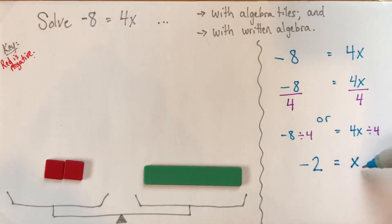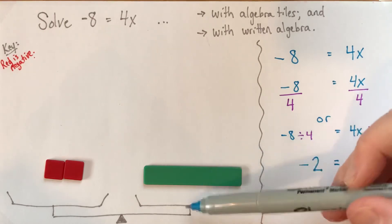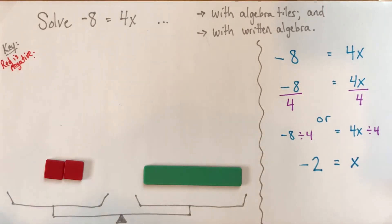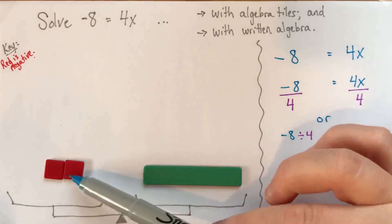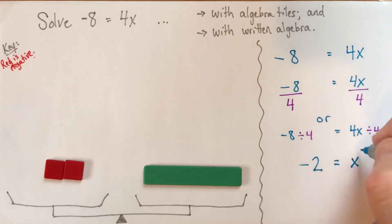Our goal was to isolate x, to just get an x all alone on one side of the balance, or on one side of the equation, and to see what our value of x has to be. So our solution here is x equals negative 2.